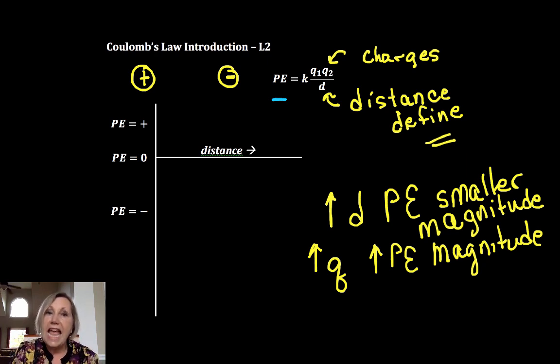So the more negative the potential energy, the greater the attraction. So as we decrease the distance, if this is, let's say they're infinitely far apart, as we decrease the distance, they're getting closer and closer and closer and closer together, we'll notice that the potential energy will decrease.